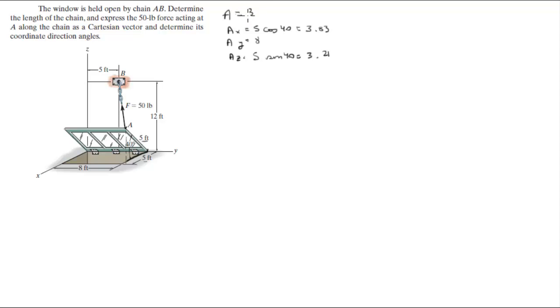So A is equal to 3.83i plus 8j plus 3.21k. Now B is equal to 0 in the i because it sits at the YZ plane, plus 5 in the j, plus 12 in the k.